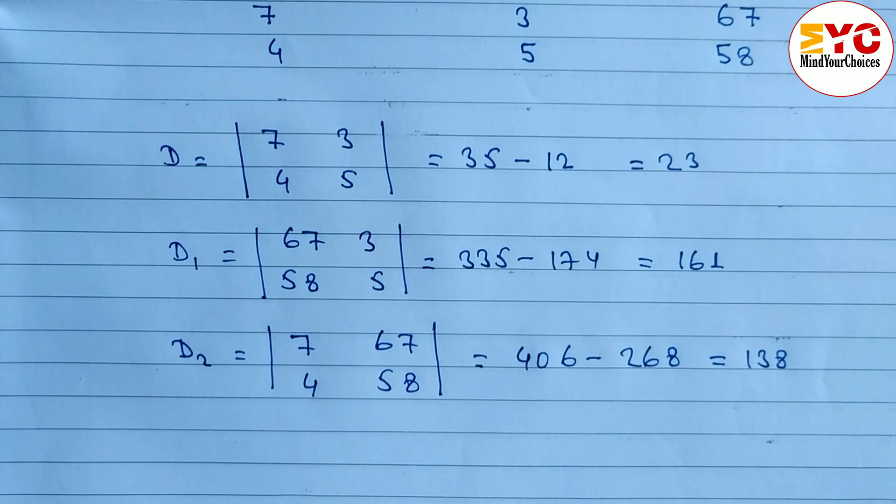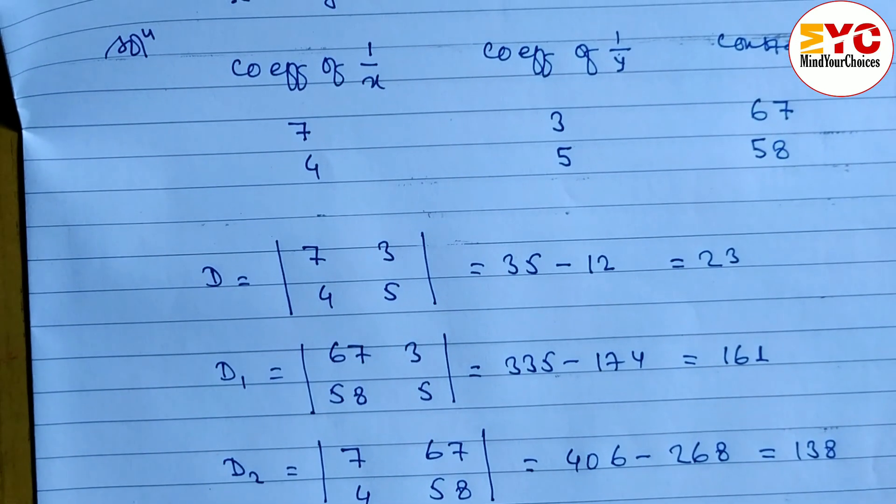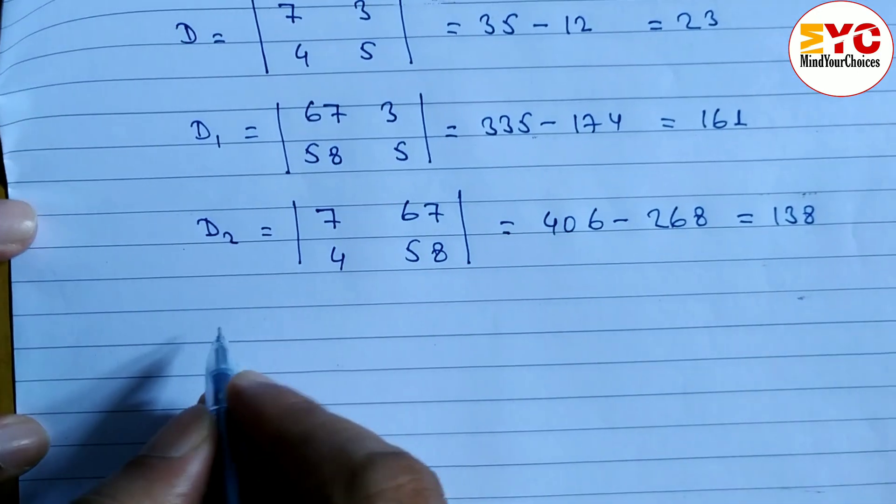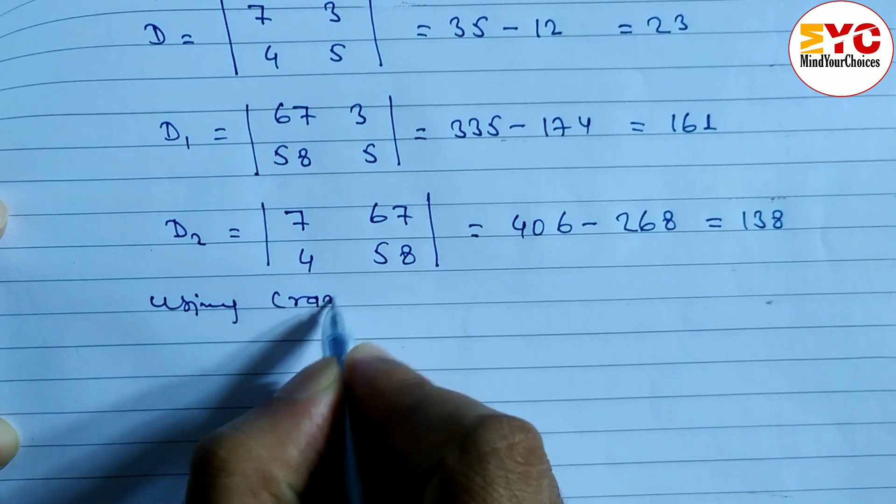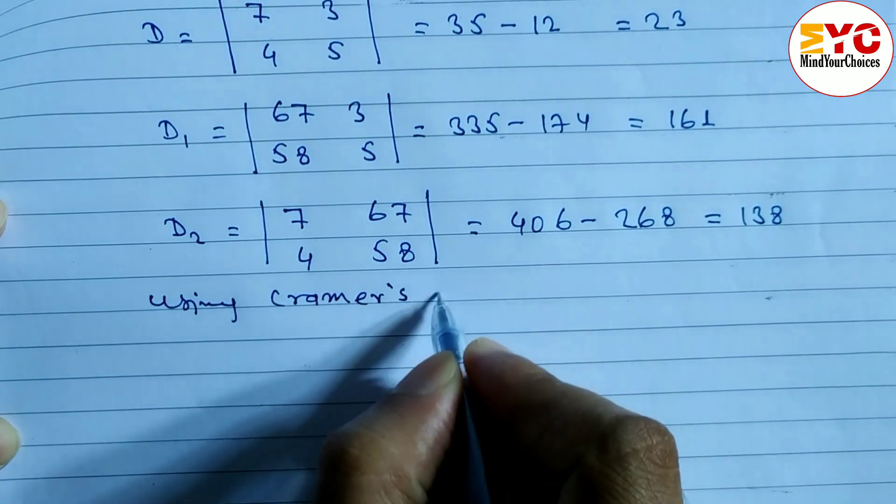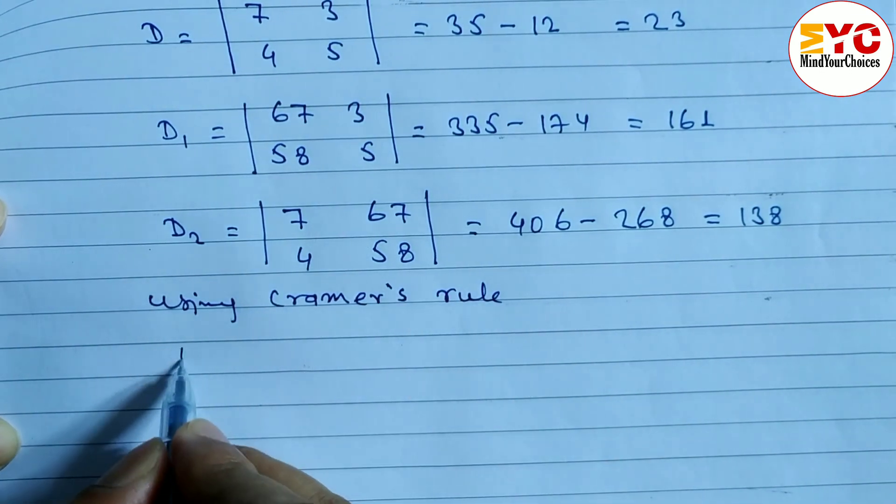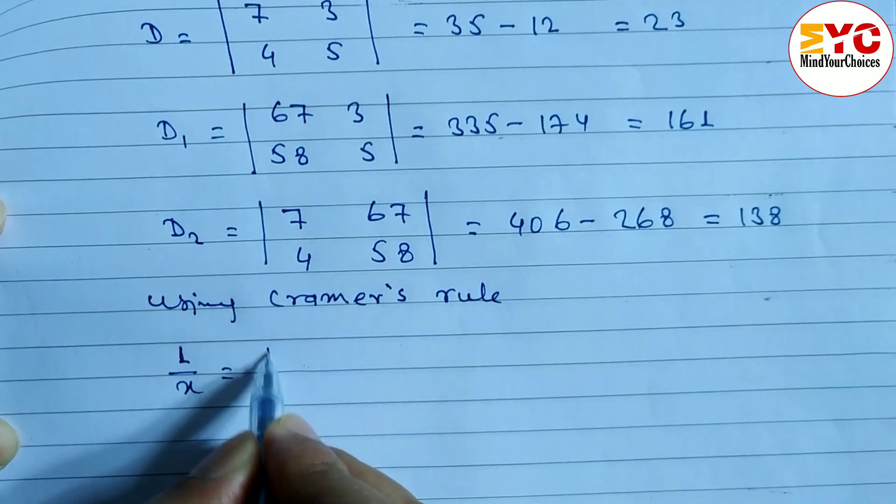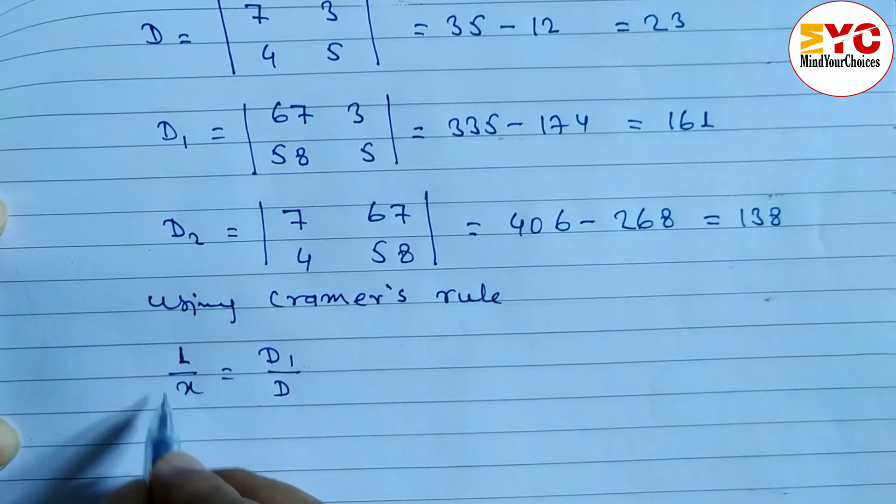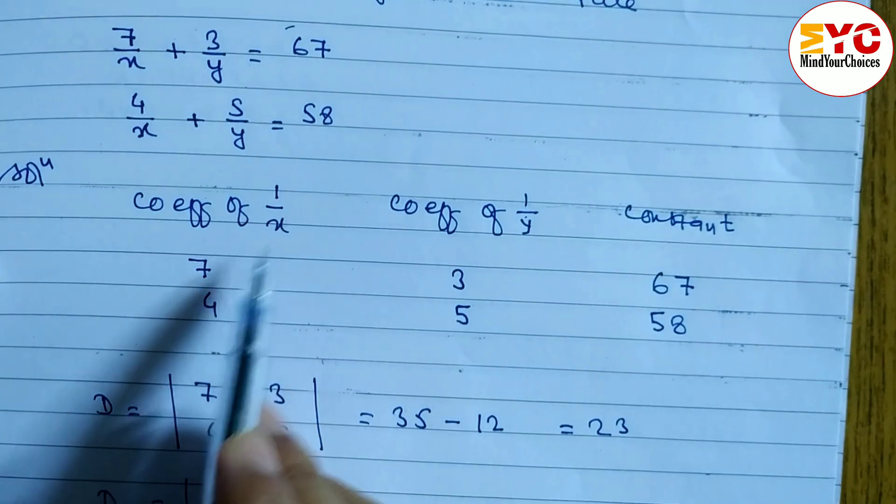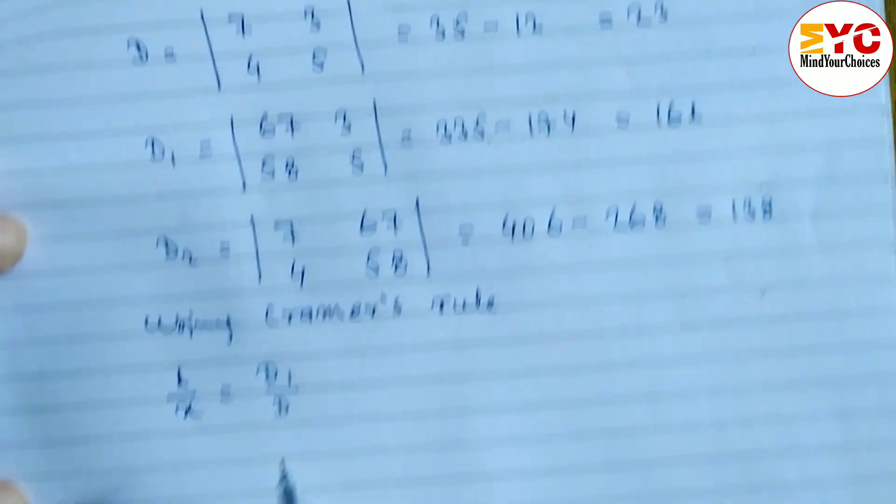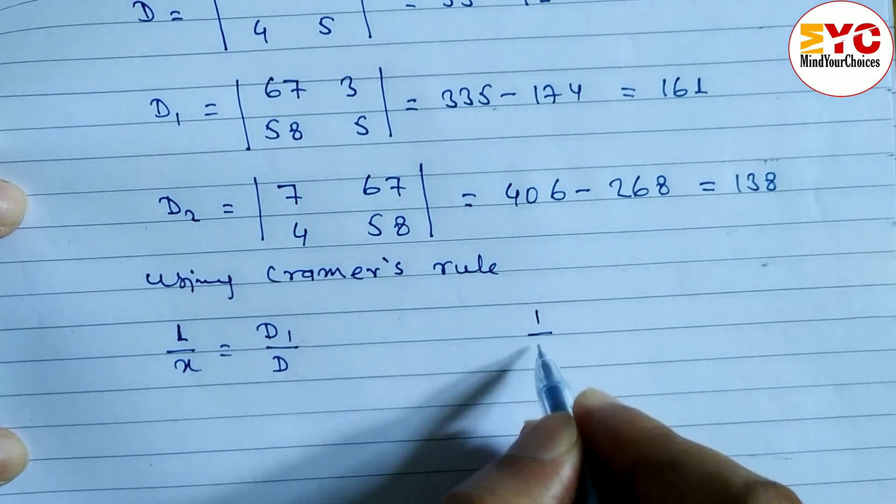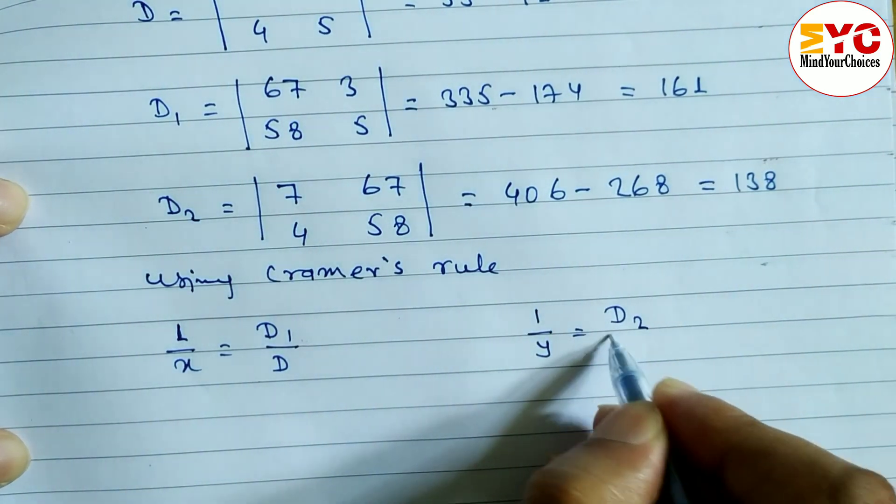Hope you understand up to here. Now we have to use Cramer's rule and we have to find out the value of x and y. So what we have to write here? Using Cramer's rule. So we have to find 1 by x is equal to d1 by d. Why to write 1 by x? Because here coefficient of 1 by x we found. Here coefficient of 1 by y we can found here. So we have to write 1 by x and 1 by y. 1 by y is equal to d2 by d.